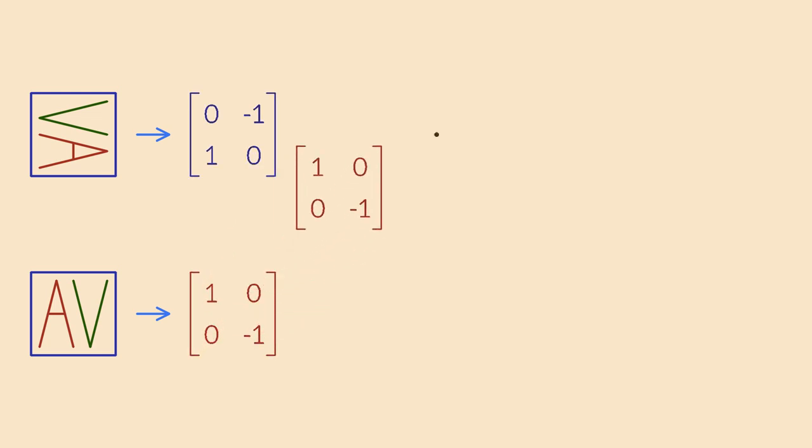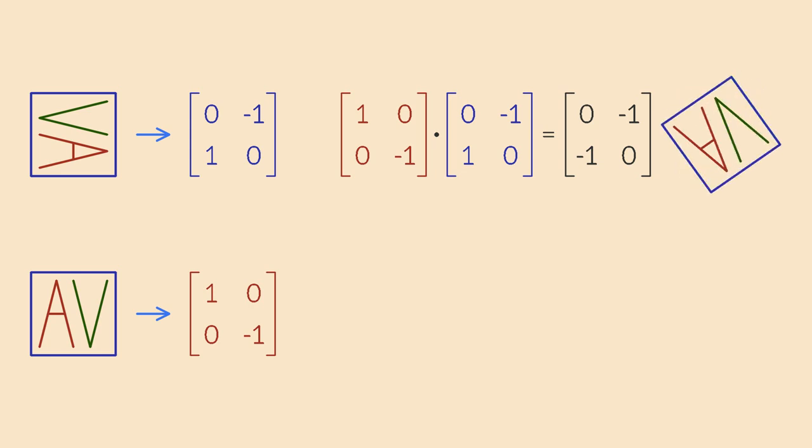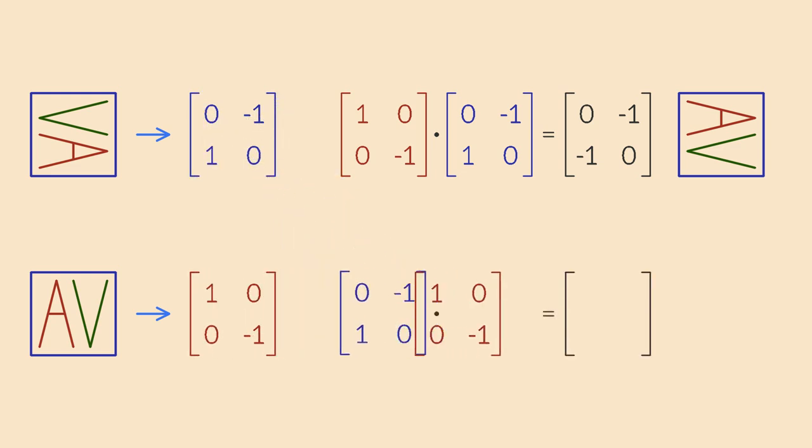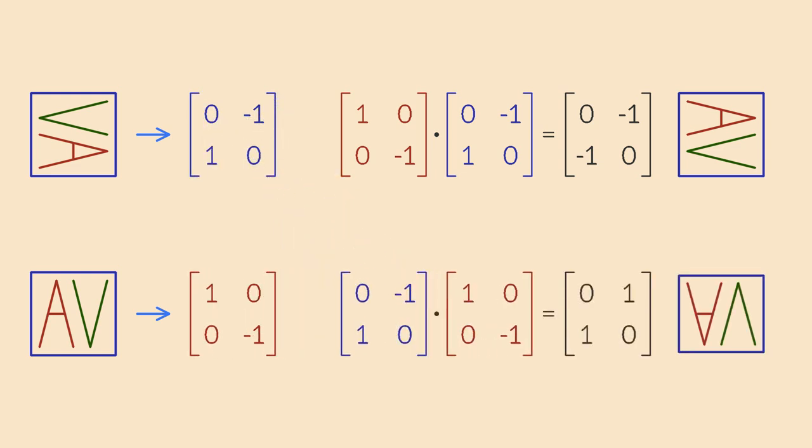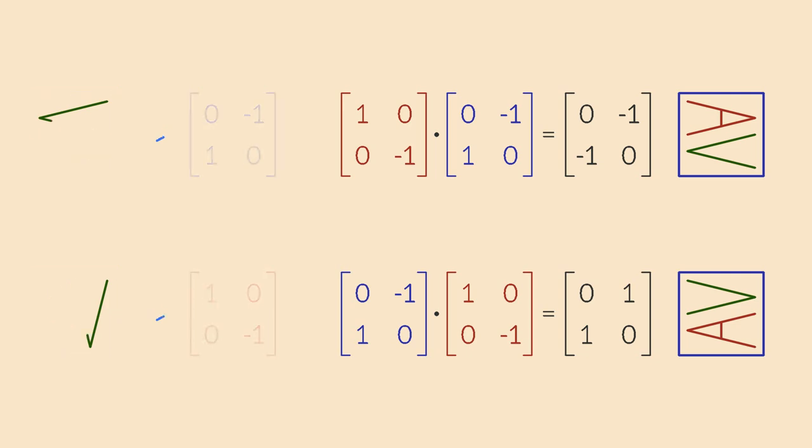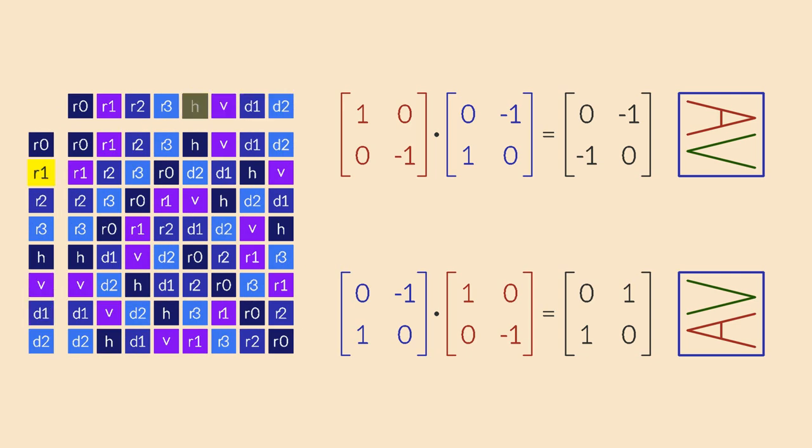One key feature of matrix multiplication is that it doesn't commute. If you multiply by a rotation matrix and then a reflection matrix, you may get a different answer than if you multiply in the other order. This is just the same kind of non-commutativity we saw in the Cayley table earlier, but now expressed in terms of matrices.